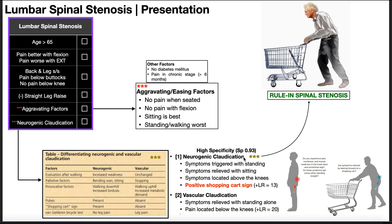In neurogenic claudication, symptoms are triggered with standing and relieved with sitting. Comparing to vascular claudication: vascular symptoms are triggered by walking — increased activity creates greater oxygen demand that the blocked artery can't meet — and they relieve simply with standing still. In neurogenic claudication, symptoms are triggered with standing and relieved with sitting because you go into flexion. Also, in vascular claudication pain is below the knees; in neurogenic claudication symptoms are above the knees with no pain or symptoms below them.